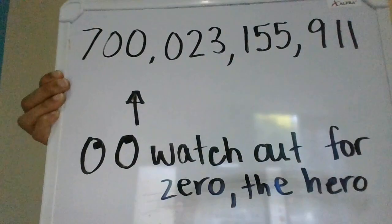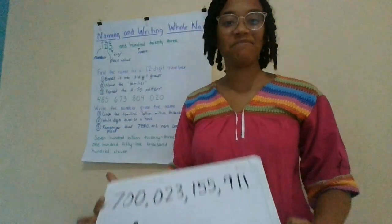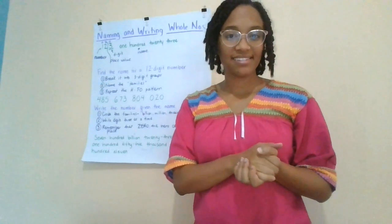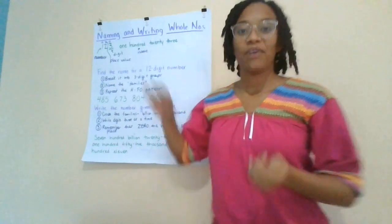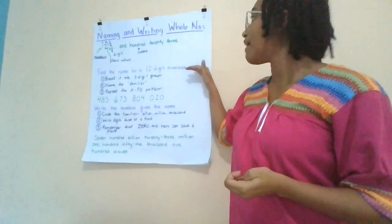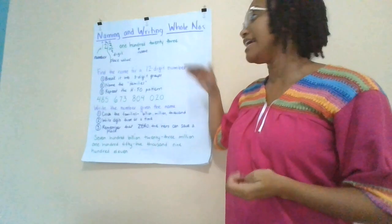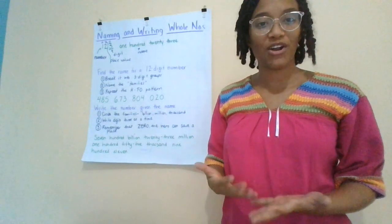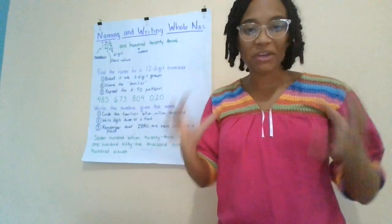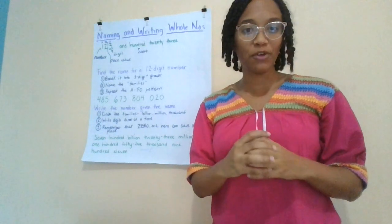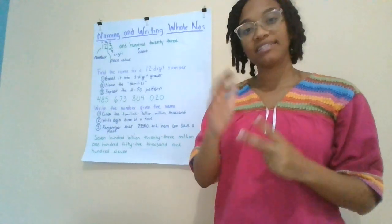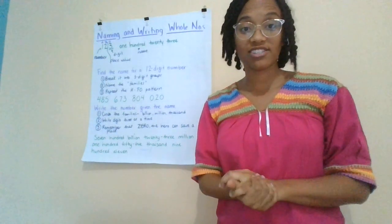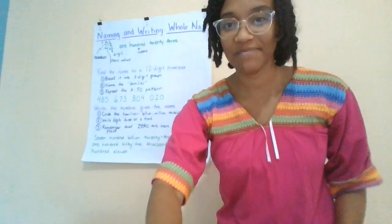Make sure you watch out for those zeros — they can be tricky. I'd like you to practice this technique, whether you're going from a number into the name or from a name into the number. Remember that we focus on these three-digit family groups: billions, millions, and thousands. Now it's your chance to try. Watch out for those zeros.